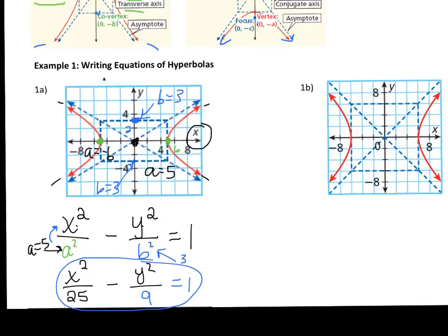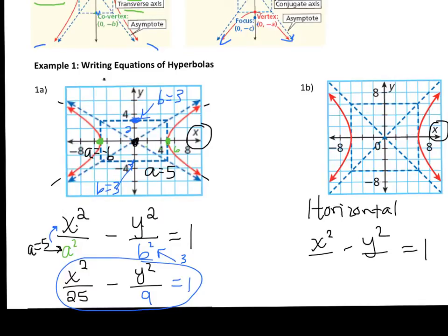On the next one we also have a horizontal hyperbola, so x squared comes first with a minus sign then y squared. The scale goes 2, 4, 6, 8 — so a is 6, giving us 6 squared which is 36 under x squared. The co-vertices are also at 6 and negative 6, so b squared is also 36 and we're done.